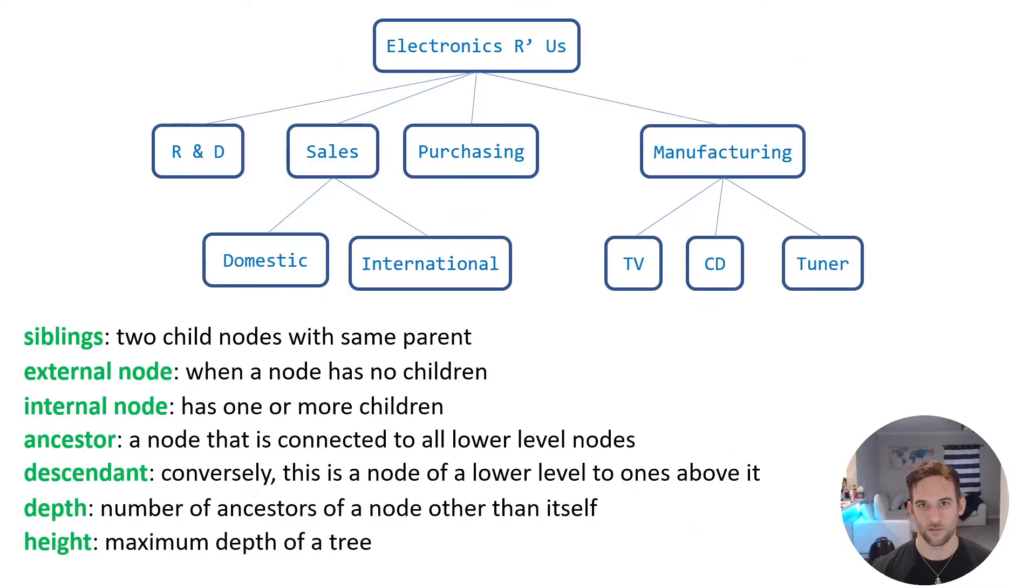So the next thing we're going to do is go over some more in-depth terminology. We're going to take a look at the same tree structure, and let's go to the first thing, and that is siblings. So these are two child nodes with the same parent. So in this case, we could say look at domestic and international. These are siblings because they have the same parent node, sales. We could also look at sales, purchasing, and R and D. These are all siblings to each other because they have the same parent, Electronics R Us.